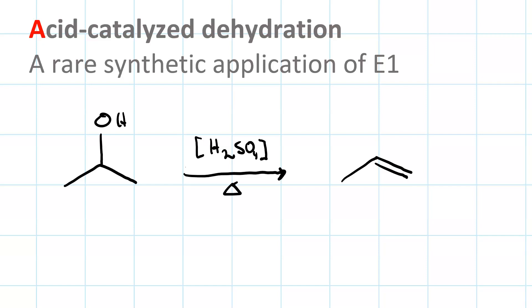To cause acid catalyzed dehydration, we'll treat an alcohol with concentrated acid. That's what the brackets here around the H2SO4 mean. Concentrated sulfuric acid. You might also use concentrated phosphoric acid.